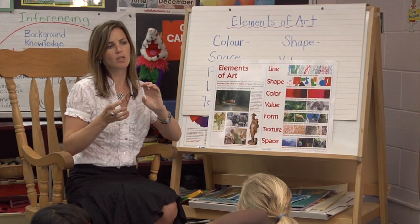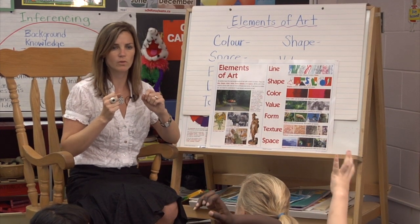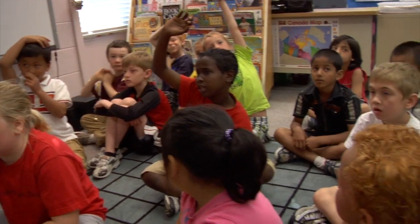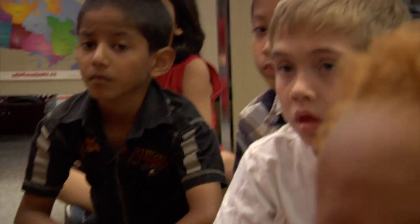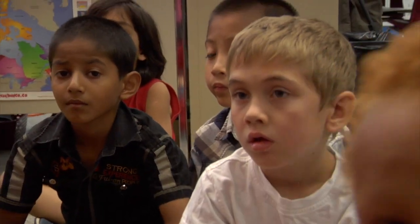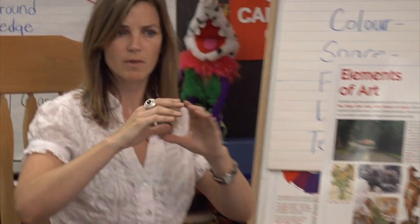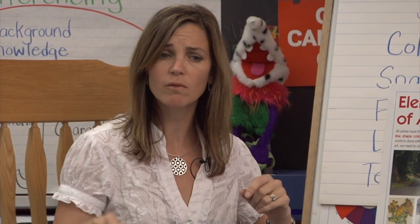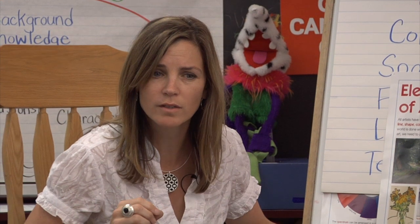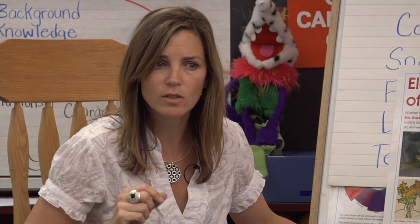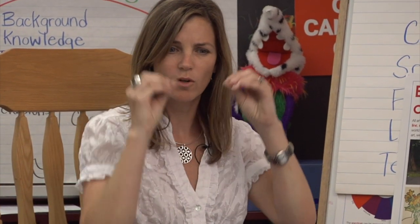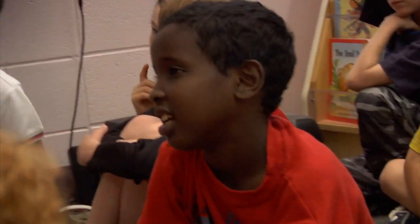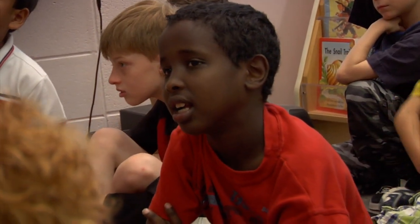There are two different kinds of shapes we talked about. Do you remember the two different words? Those triangular shapes or shapes with corners — they could be rectangular or irregular. Do you remember what those are called? We looked at those when we looked at Picasso's Weeping Woman. She had all of those types of shapes. Geometric! Excellent.